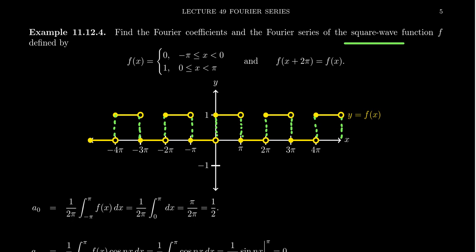This function is a 2π periodic piecewise continuous function. It does have discontinuities, but every connected piece is itself continuous. By the Fourier convergence theorem from the previous video, we know this function has a Fourier series representation. The Fourier series will equal the function at all points except at the discontinuities — at the jump discontinuities, it will grab the midpoint, which is 1/2, since the left-hand limit is 1 and the right-hand limit is 0.